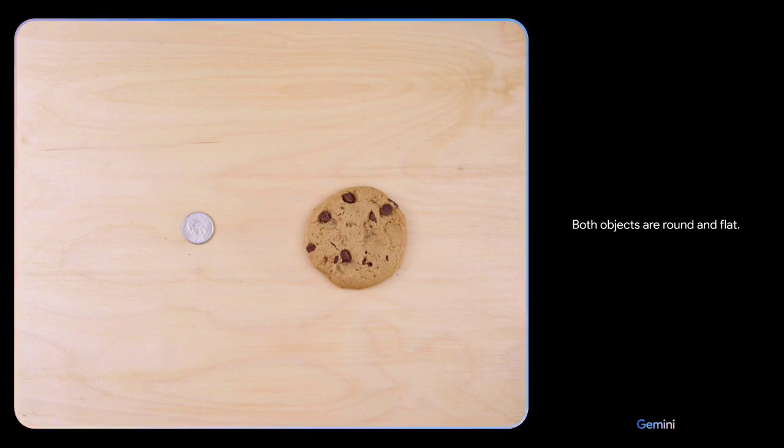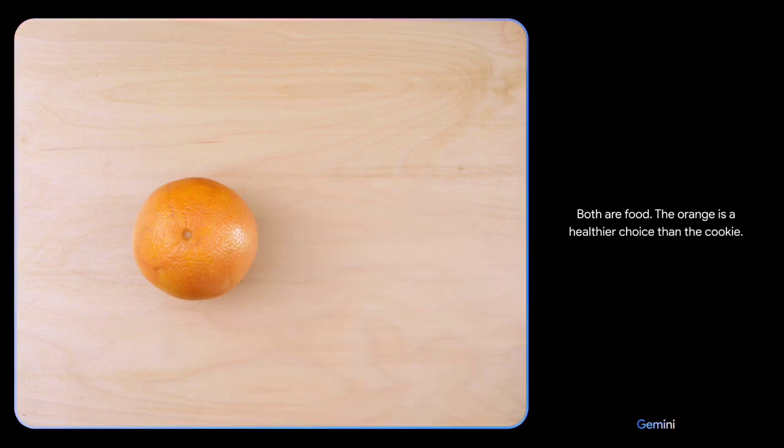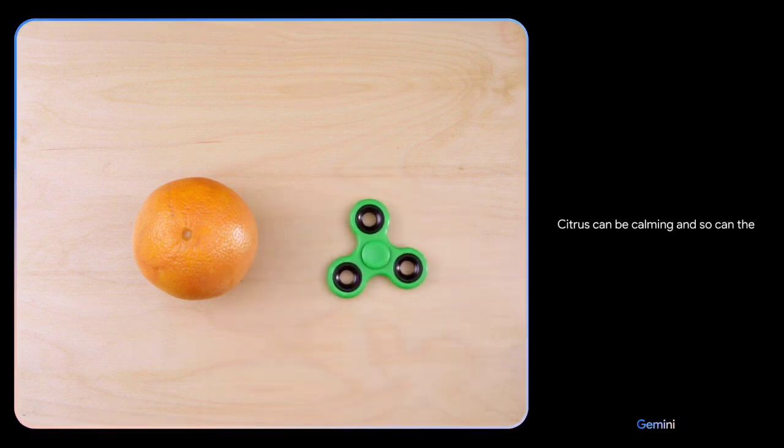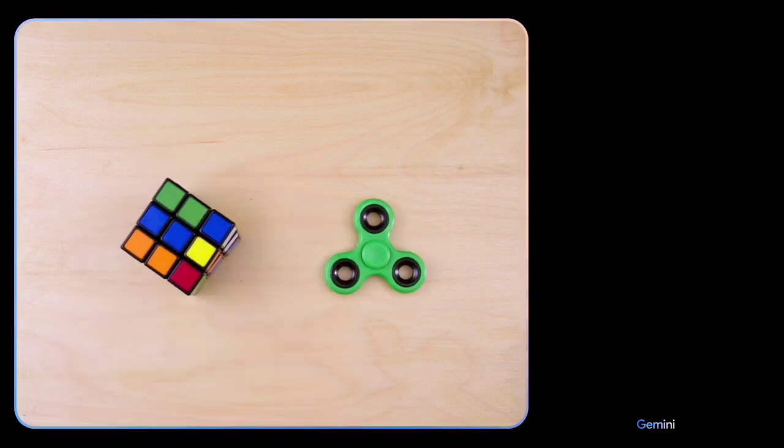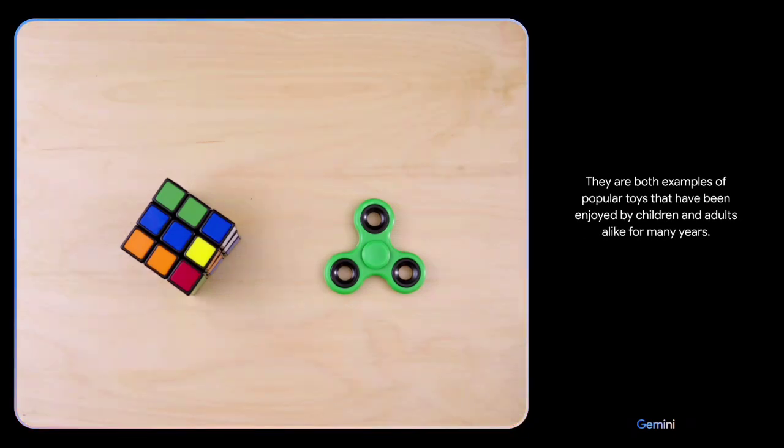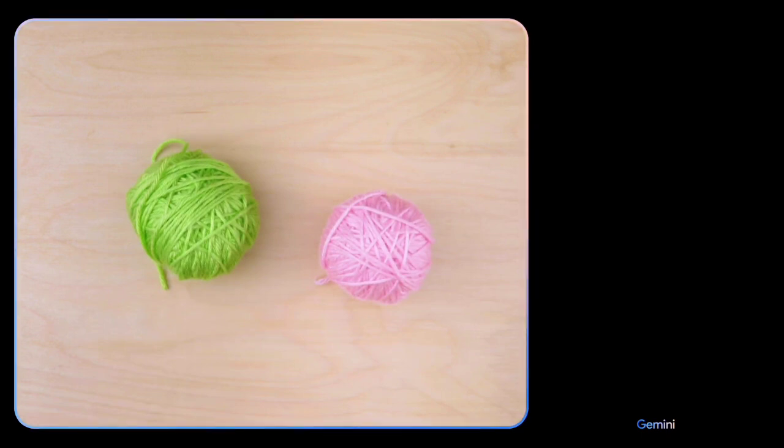Both objects are round and flat. There you go. Both are food. The orange is a healthier choice than the cookie. Citrus can be calming and so can the spin of the fidget toy. They are both examples of popular toys that have been enjoyed by children and adults alike for many years.